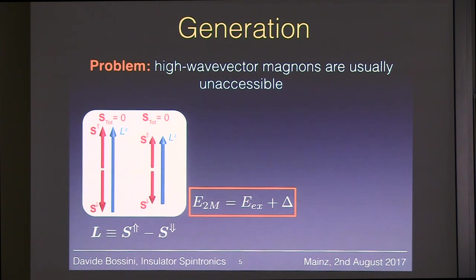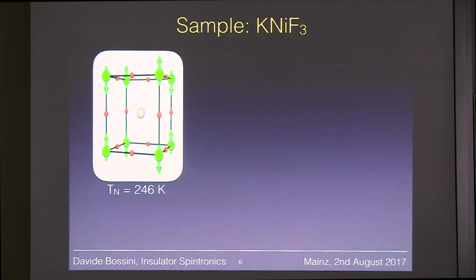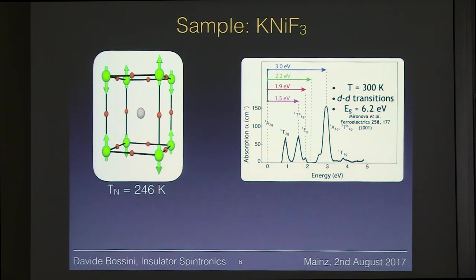Let me show you the Raman spectrum of a Heisenberg antiferromagnet, potassium nickel fluoride (KNiF₃), measured in 1971. The huge mode visible here is the two-magnon mode. Potassium nickel fluoride is a cubic Heisenberg antiferromagnet — the simplest possible three-dimensional antiferromagnet, essentially a Heisenberg chain along the three cubic axes. The Néel temperature is 246 Kelvin. Its optical properties are experimentalist-friendly: we show the absorption spectrum up to 5 eV, and the band gap is at 6.2 eV. All transitions seen here are localized transitions in the gap.